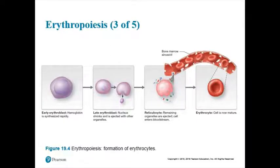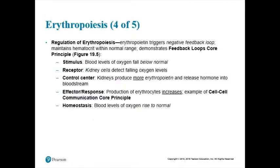We saw that to do erythropoiesis, you needed help — a hormone coming from an entirely different organ. Your kidneys have a say on how much blood you have because your kidneys are helping with homeostatic levels of blood. You've got to keep blood in a nice homeostatic range. If you don't have enough blood, that's a problem — it's called anemia. If you have too much blood, that's also a problem.